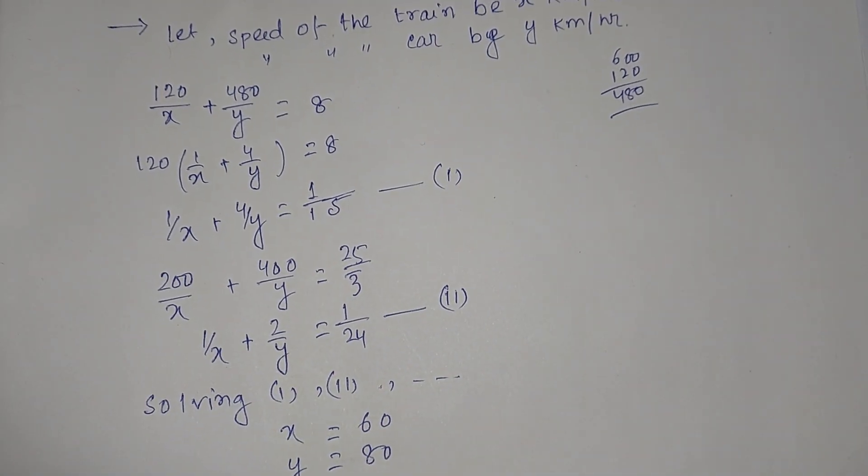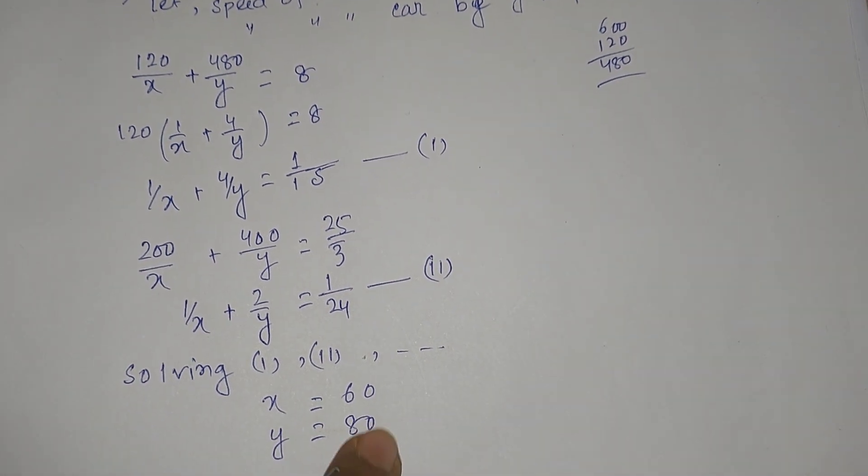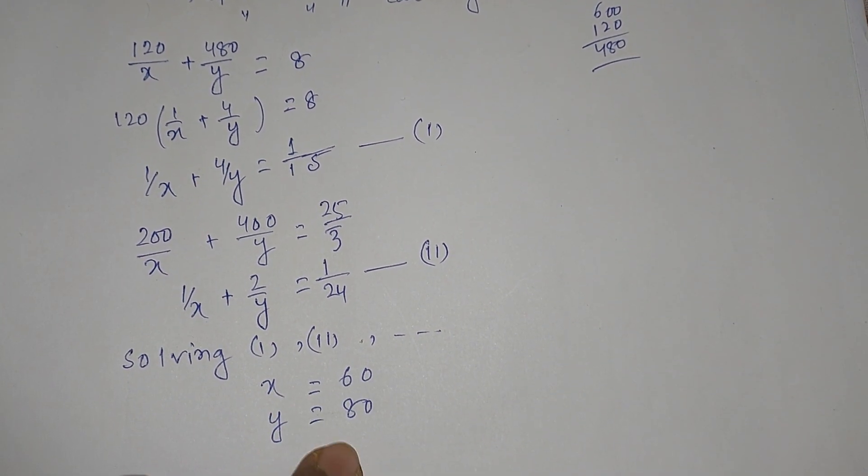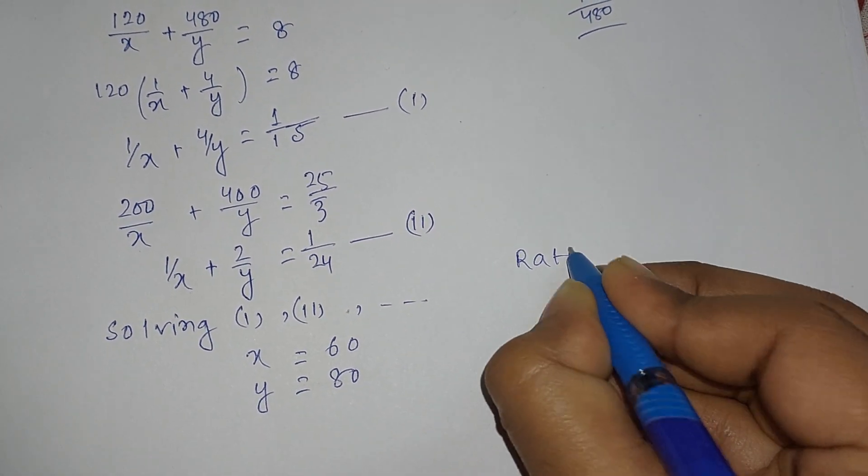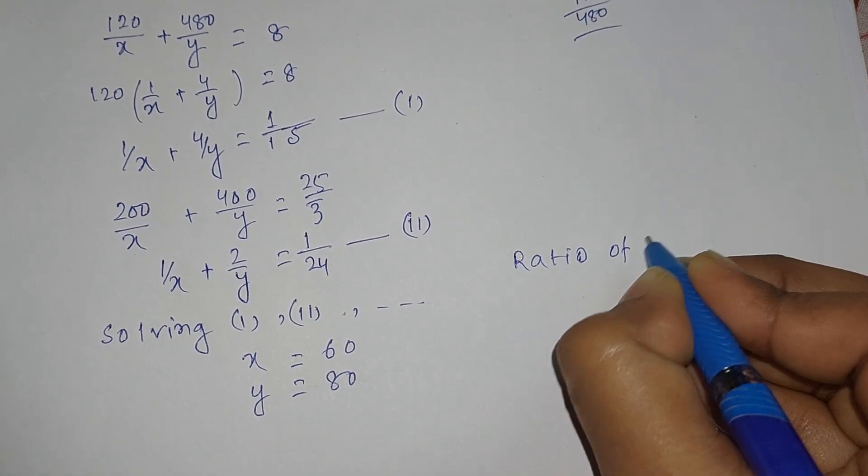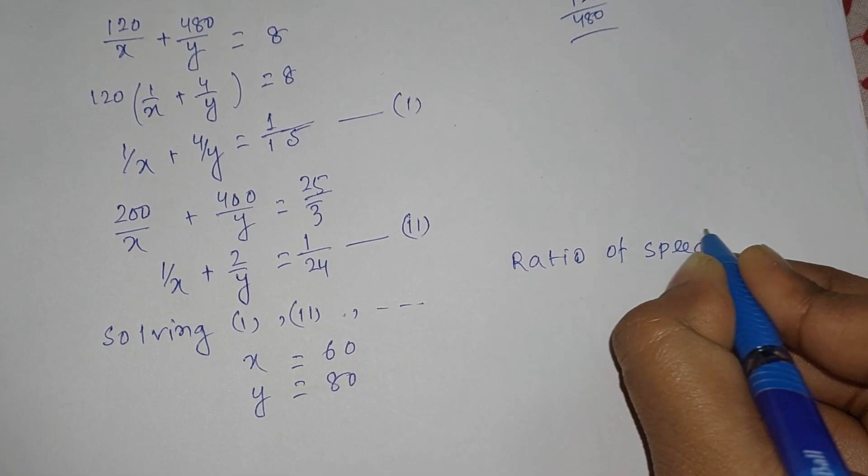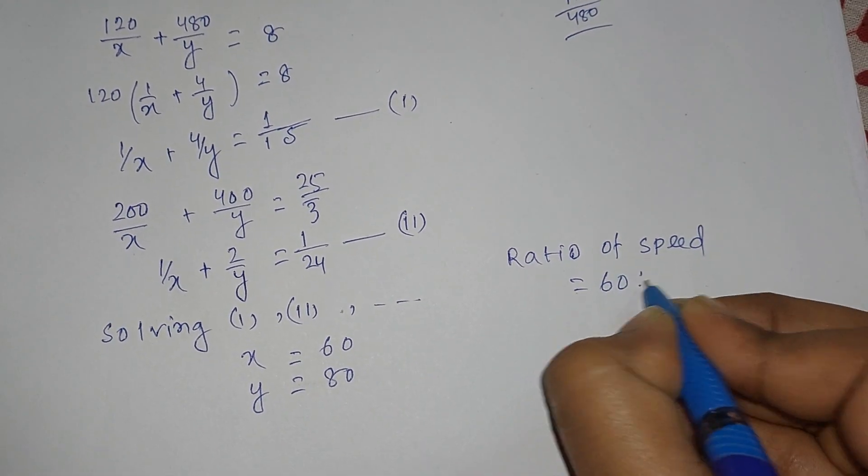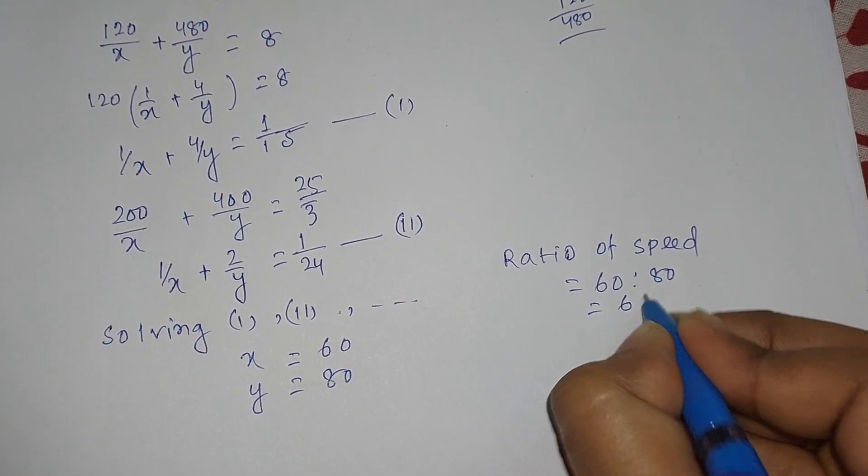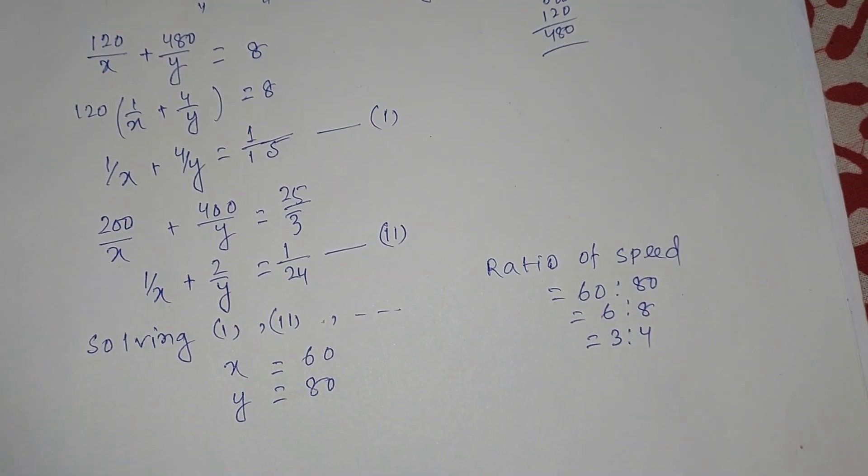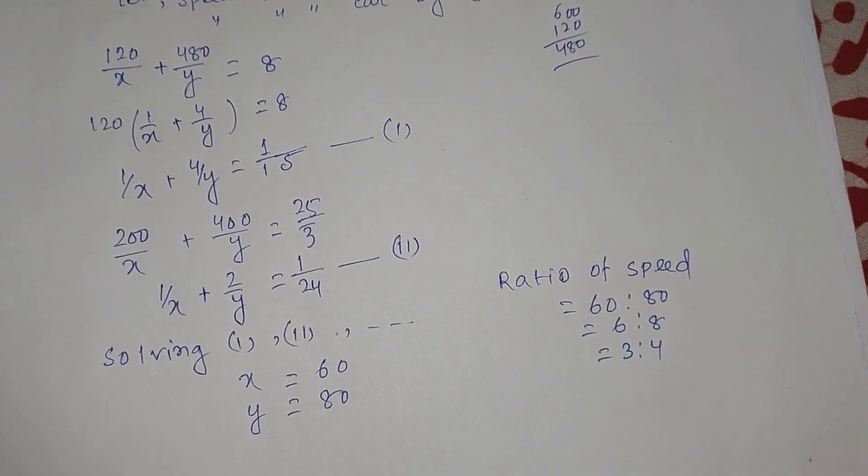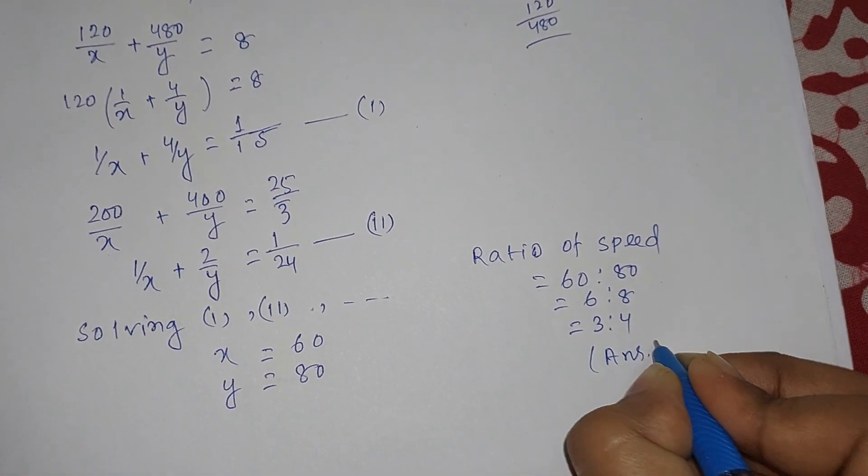If x and y are the speeds, then the ratio of speed is 60 to 80, which is 6 to 8, which simplifies to 3 to 4. So the answer is 3 to 4.